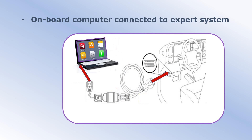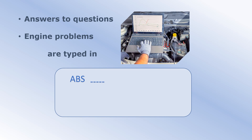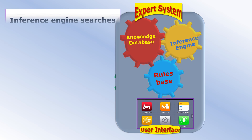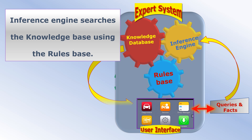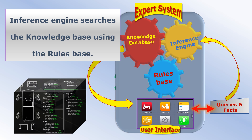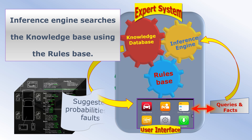Next, answers to questions and engine problems are typed in. Then the inference engine searches the knowledge base using the rule base, where suggested probabilities of faults are output in the form of a report to the mechanic, as well as an on-screen report being displayed.